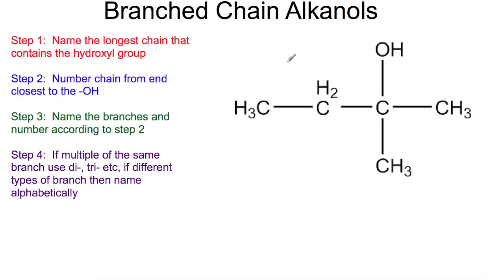So the rules for naming the branch chain alcohols are very similar to those that you've used for naming branch chain alkanes and alkenes. Step one is always to find the longest chain that contains your functional group. In this case that is the OH hydroxyl group. So our longest chain is this one here with four carbons. So if you were to name that then you would call that the butan part.